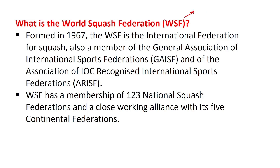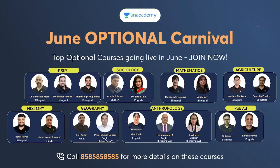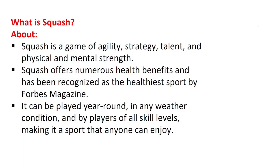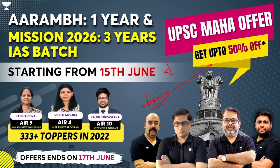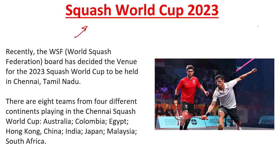To recap: the World Squash Federation's World Cup is being held in 2023 in Chennai, Tamil Nadu. Four important continents are represented. The competing countries are Australia, Colombia, Egypt, Hong Kong, China, India, Japan, Malaysia, and South Africa — eight teams in total. It is significant for us that our country India is participating in this particular game.